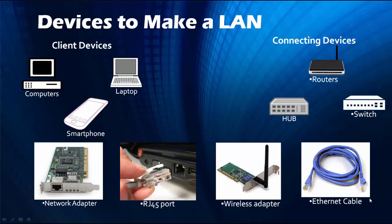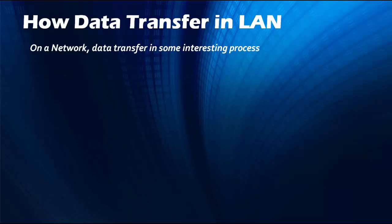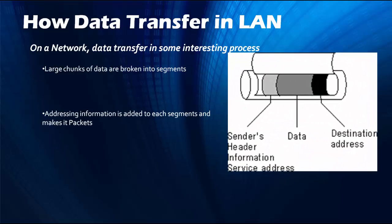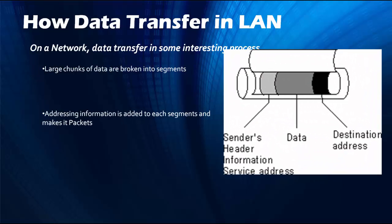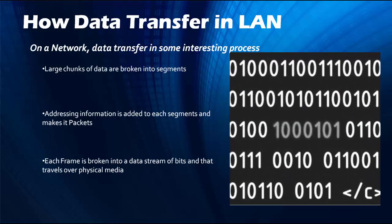The other thing we need is an Ethernet cable. Ethernet is a technology which allows us to connect multiple devices to form a LAN. How is data transferred in LAN? Before the data is transferred over the network, it has to go through some interesting process. First, the large chunks of data are broken into segments. Then some addressing information or IP address is wrapped around the segment — this is called a packet. Then it is added with some more information to make it a frame. Then each frame is broken into a data stream of bits and travels over the physical media in binary.